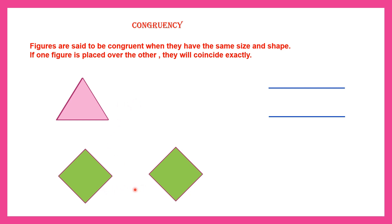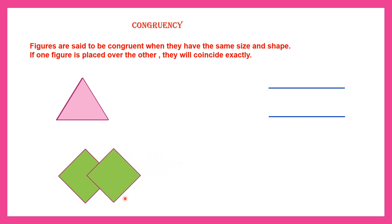Now let's take another example. Look at these two shapes — they are the same size, same shape. Now let's see if they coincide when they are placed over each other. As you can see, they are coinciding exactly. That means those two shapes are congruent.